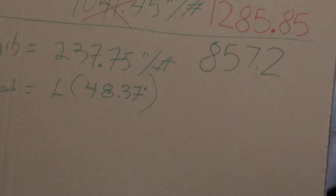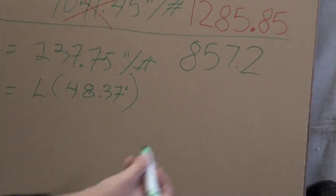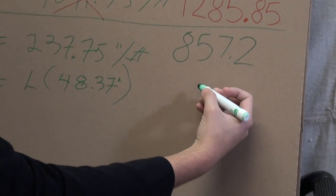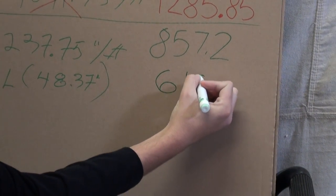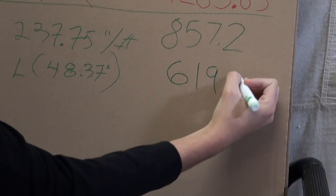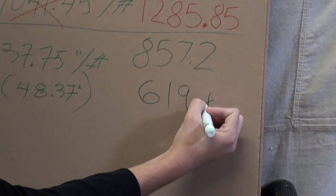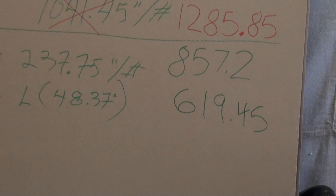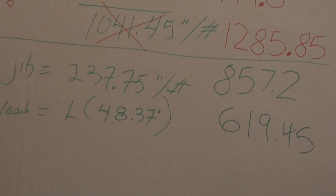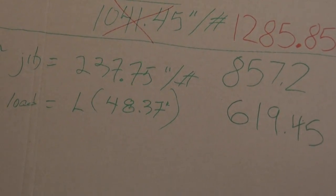Right, now if we know that the torque of the jib is 237, so we can subtract that from the 857, and we get 619.45 inch-pounds of torque. So that is the torque of the load, which is the load weight times distance.